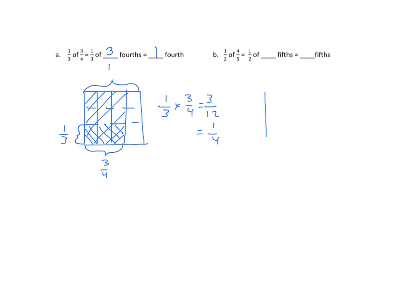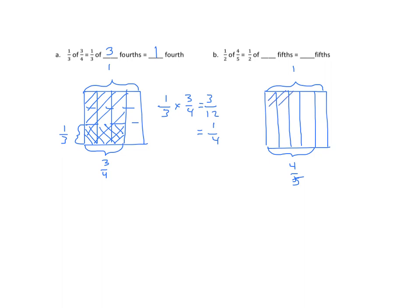Example B — again, we'll start with our rectangular area model. We have one-half of four-fifths. So I'll partition this into five equal parts, bracket four-fifths, and then shade four out of five of our partitions. Now we want one-half of that, so we're going to use one horizontal line.